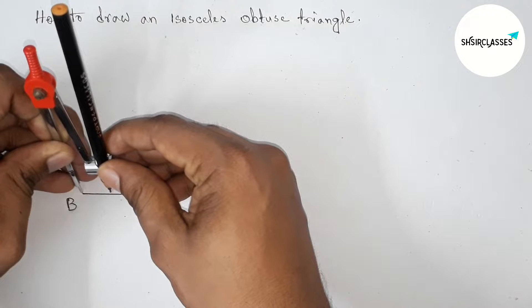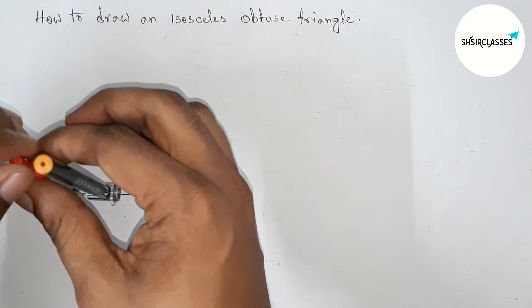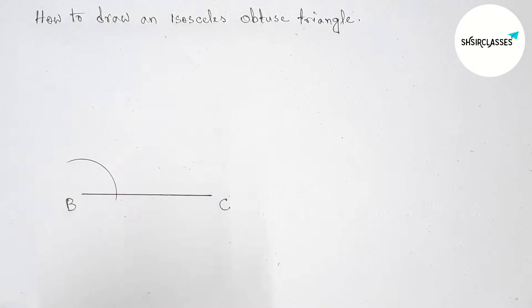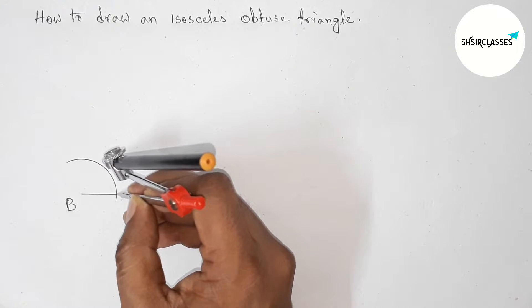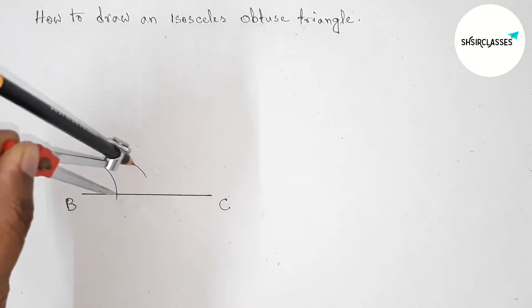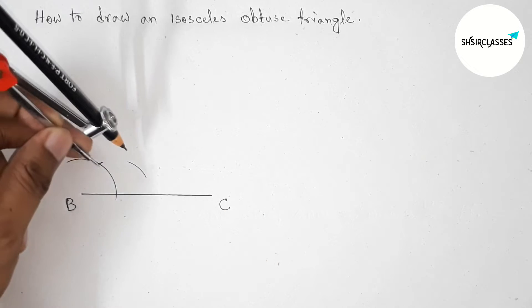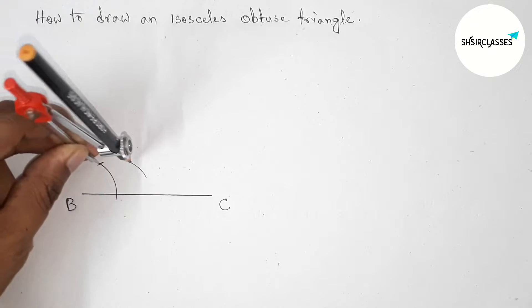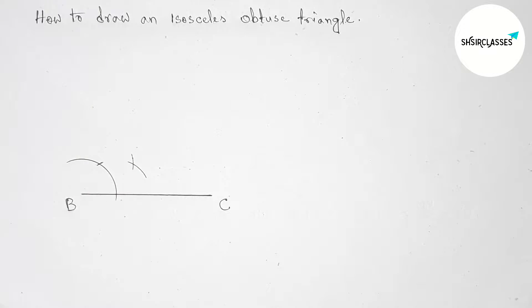First, putting the compass on the point B and taking any length, now drawing an arc by this way. Now putting the compass here with same length and cut here, and drawing an arc here again with same length and putting the compass here and cut here.